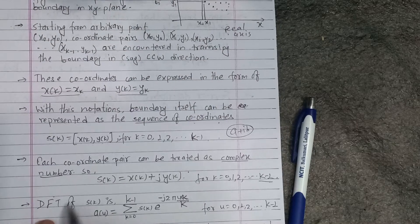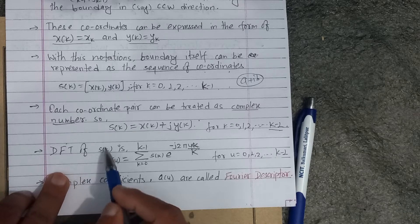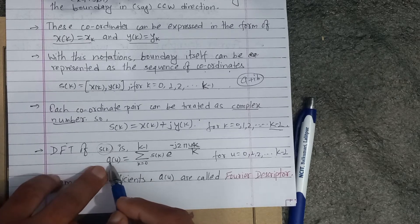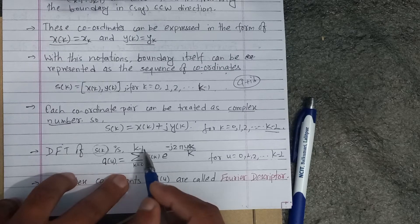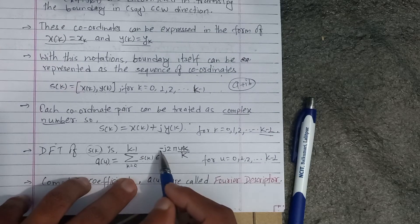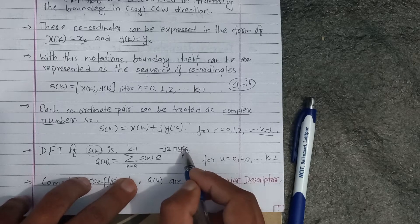Now, this is discrete Fourier transform. This discrete Fourier transform is a(u) equals to, which is Fourier transform, k equals to 0 to k minus 1, s(k) to the power of j 2 pi u k by k.